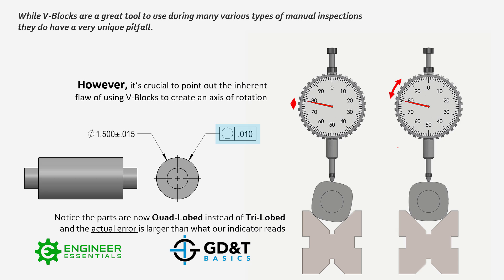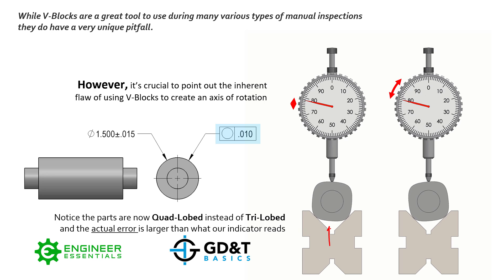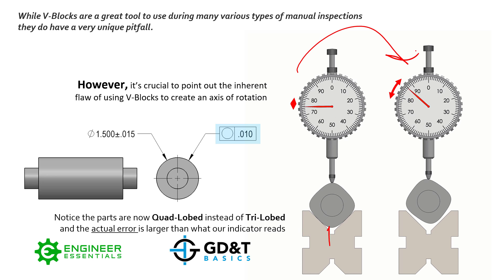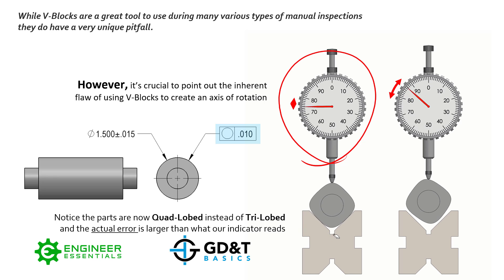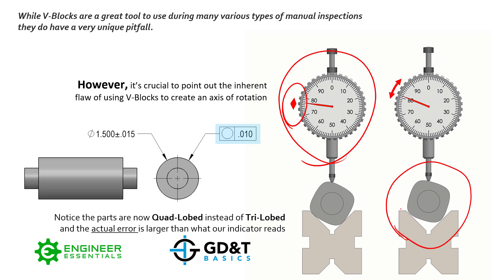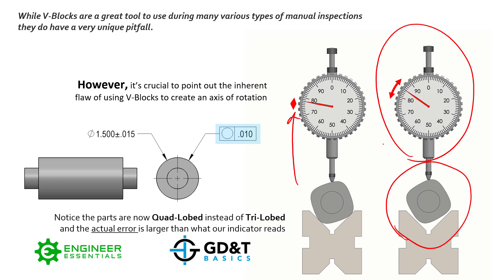If we look at a quad-lobed part — first we had trilobing, now we have four high points — another common error that can happen to a cylindrical feature on a lathe. When those high points settle into the v-block, the scenario is actually flipped. The indicated value you get during measurement is going to be relatively small compared to the actual amount of error. You might find a good indicated part when in reality the actual error, fixed on its own axis, is more than twice as much.